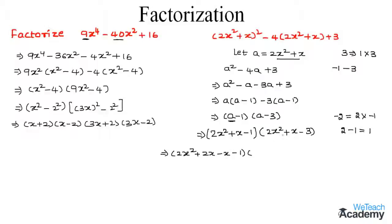Now let us factorize the second expression 2x square plus x minus 3. By multiplying the coefficient of x square and the constant term minus 3 we get minus 6. The factors of minus 6 are 3 and minus 2, and note that 3 minus 2 would be 1, which is the coefficient of x. So we can write this expression as 2x square plus 3x minus 2x minus 3.